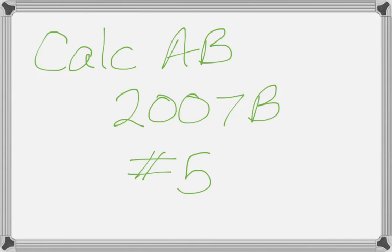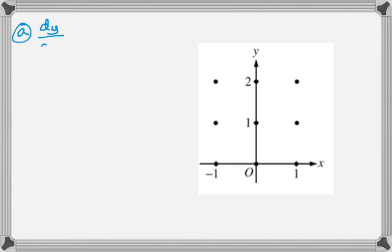Alright, this is number 5 from the 2007 Form B Calc AB exam. It is a differential equation type of problem, so the first part involves drawing a slope field, and from what I can remember of these, this is the worst slope field on any AP exam ever.